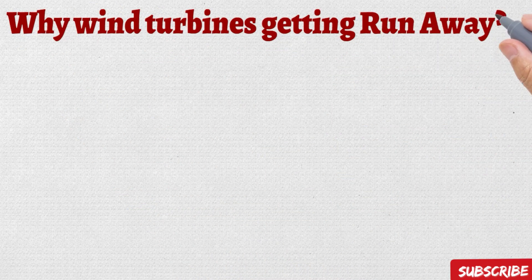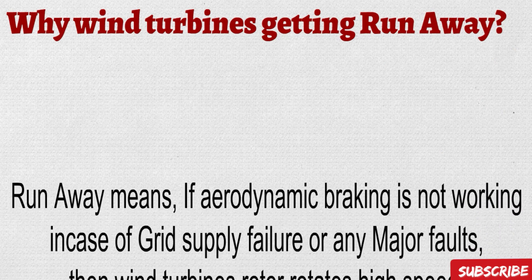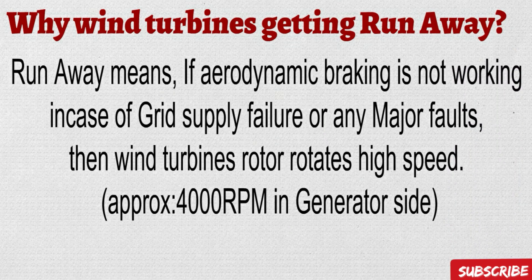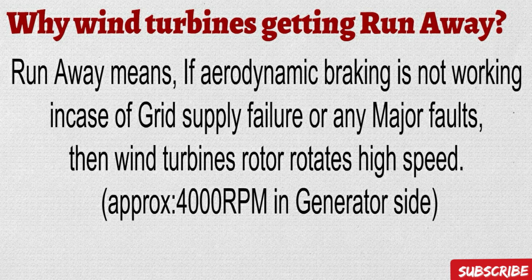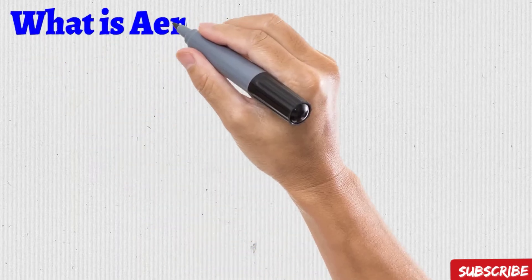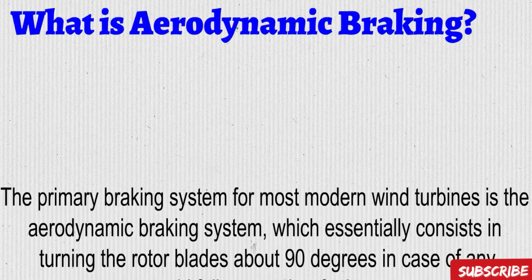Now we will see why wind turbines get a runaway. Runaway means if aerodynamic braking is not working — in case of grid supply failure or any major fault — the rotor rotates at very high speed. For example, on the generator side it can reach up to 4000 RPM, whereas normal wind turbine generation RPM is only 1500 to 1800 maximum. If it runs at 4000 RPM for even one hour, it may collapse.